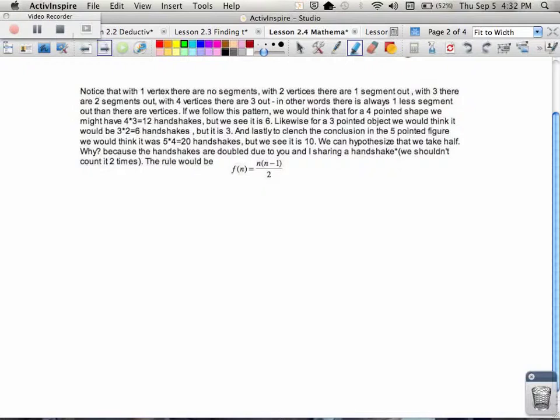And, to clinch what's going on here, in the five-pointed figure, you'd think it'd be 20, but you see it's 10. We can hypothesize that every single time that this is happening, we're taking half of what's going on. Why? Because the handshakes are double because if you and I are shaking hands, you shook one hand and I shook one hand, but it was the same handshake, and that's why we're dividing by two.